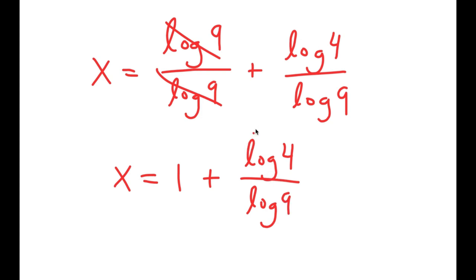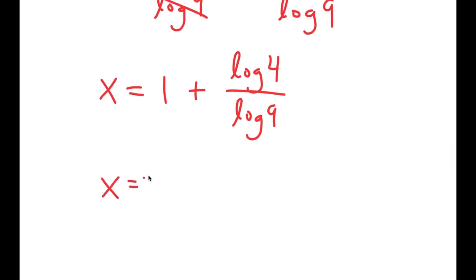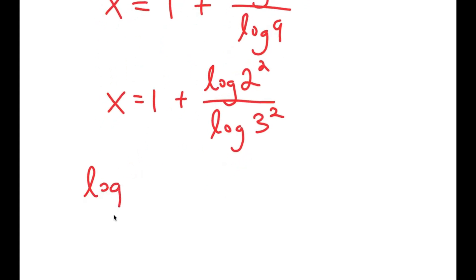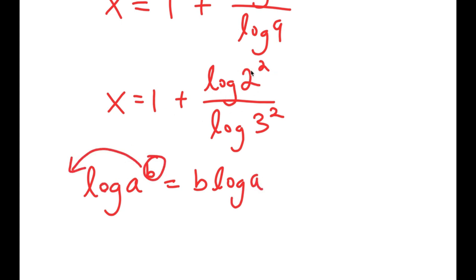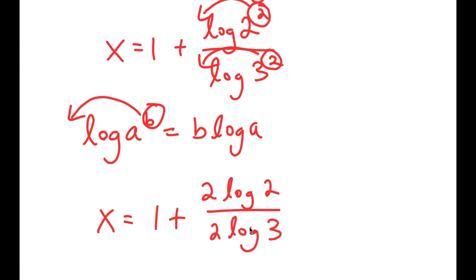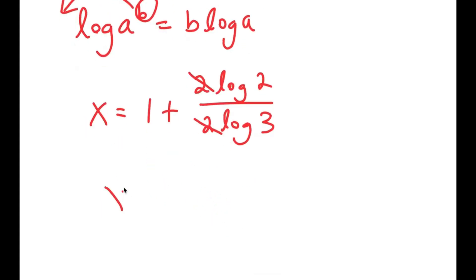From here, I rewrite log 4 as log of 2 squared — since 4 equals 2 squared — and log 9 as log of 3 squared. Using the property log a to the power of b equals b times log a, I move the 2 to the front in both terms. So I get x equals 1 plus 2 times log 2 over 2 times log 3. The 2s cancel, giving x equals 1 plus log 2 over log 3.